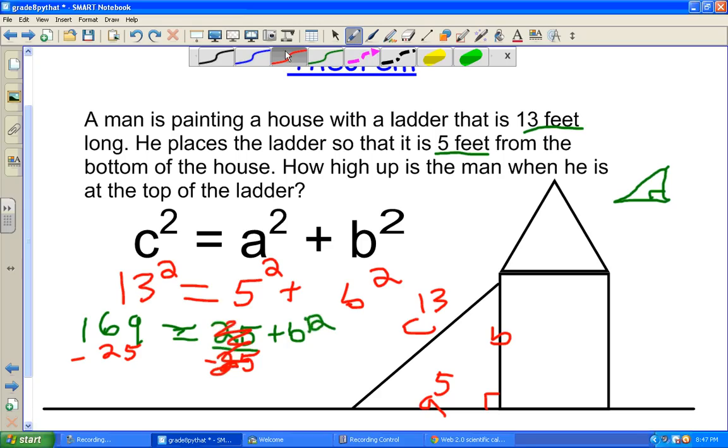So now this is what we're left with on this side. 144 equals... This was gone, remember? 144 equals B squared.